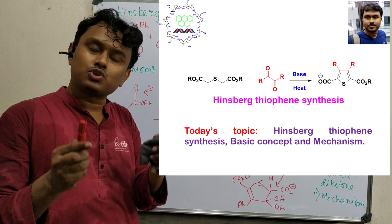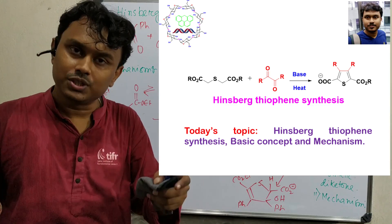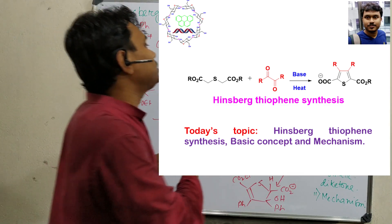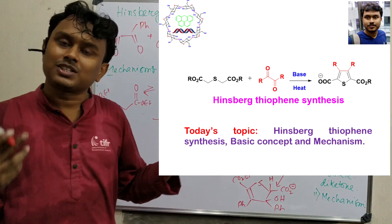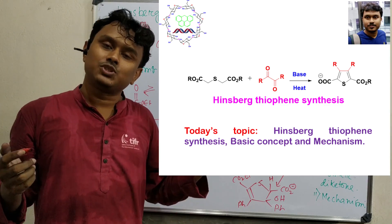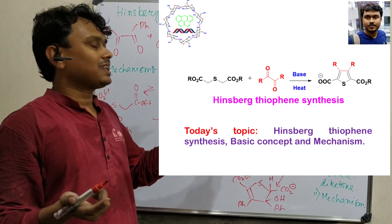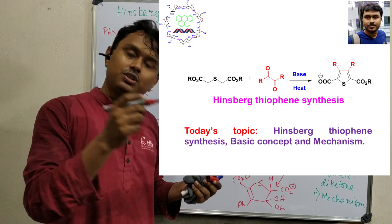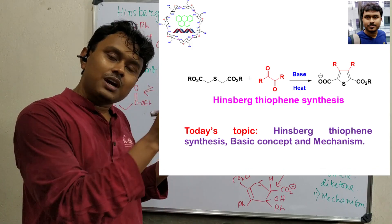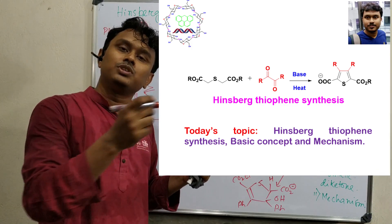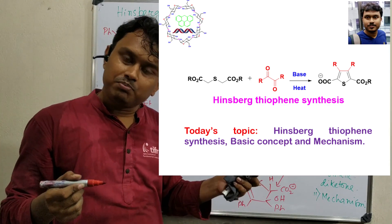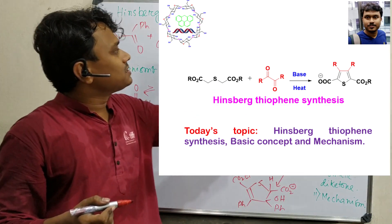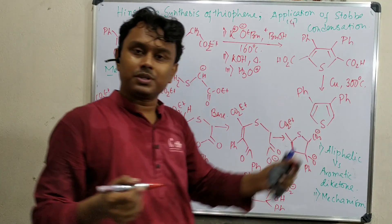Please go through that because in Stobbe condensation, three carbons could be introduced. It should be the fourth application. First is beta-gamma unsaturated carboxylic acid. Another is introduction of three using alpha-beta-gamma carbonyl carboxylic acid. And third one is naphthalene diacetic preparation. This is the fourth one, the thiophene preparation.